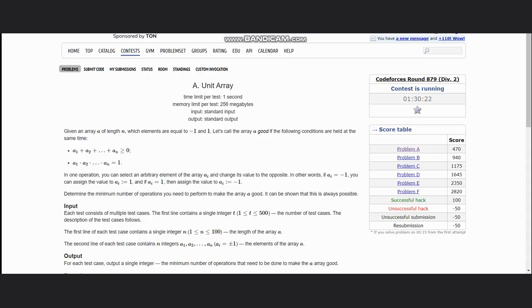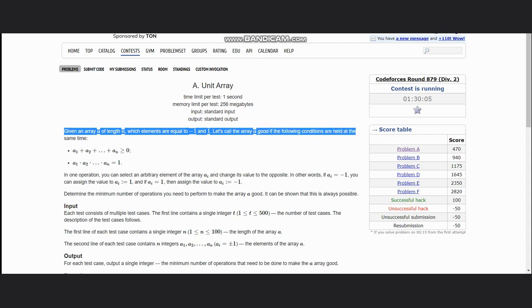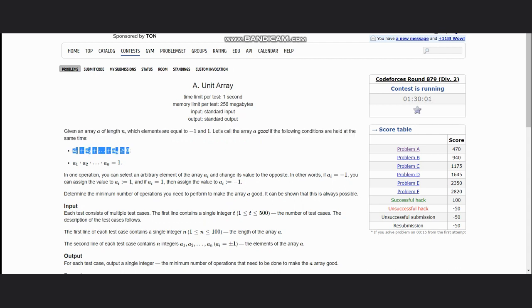Hello everyone, welcome to the channel. Here we are discussing the problem Unit Array on CodeForces. The question states that given an array of length n with elements equal to minus 1 and plus 1, let's call it good if the following conditions are held at the same time: a1 plus a2 till an is greater than or equal to 0, and the multiplication of all the elements equals 1.